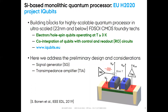The main goal of iQubits is to develop and demonstrate experimentally the building blocks for a highly scalable quantum processor in ultra-scale, that is 22 nanometer and below, fully depleted silicon-on-insulator CMOS foundry technologies. In detail, the goal is to develop electron hole spin qubits operating at 3 K or above and co-integrate the qubits with a controller readout circuit on the same chip.